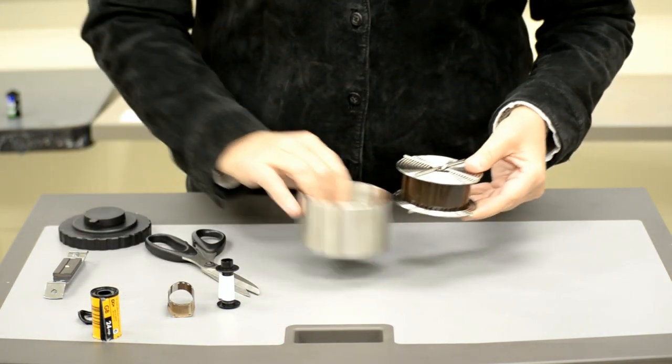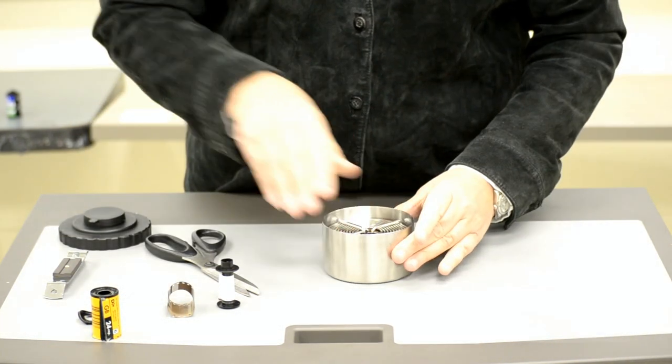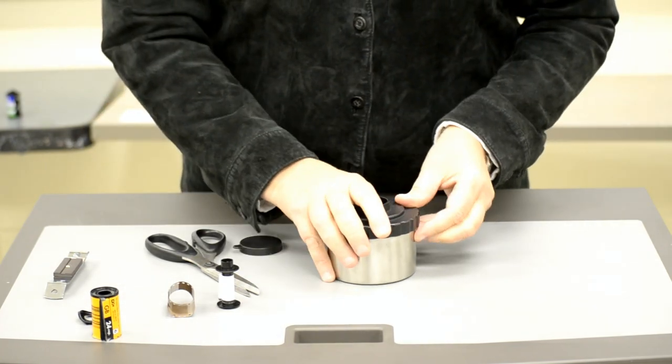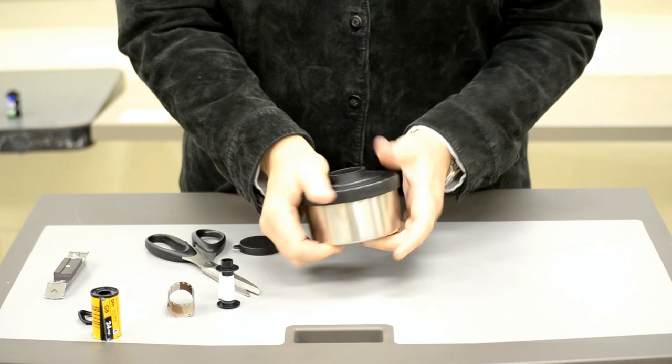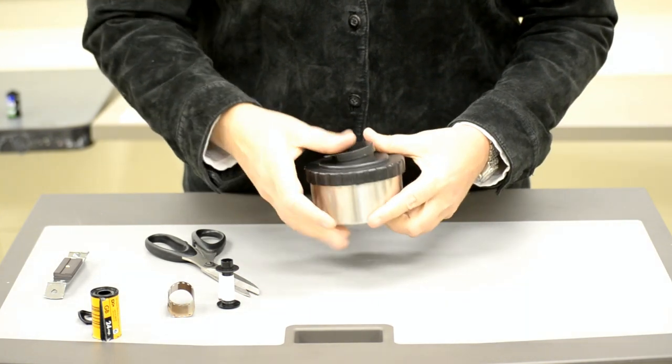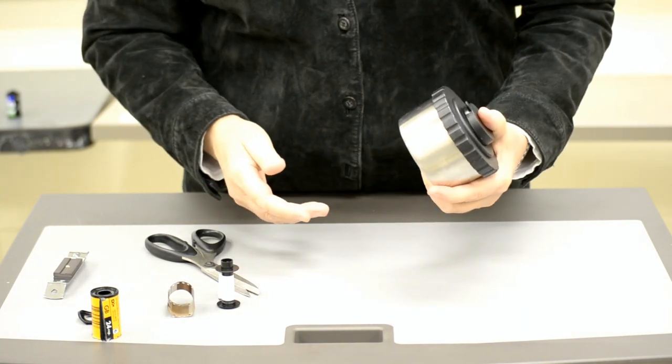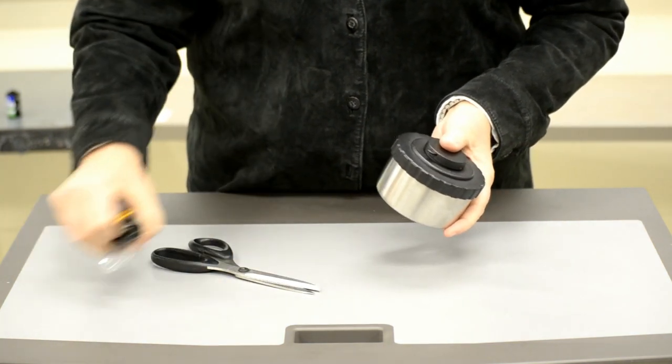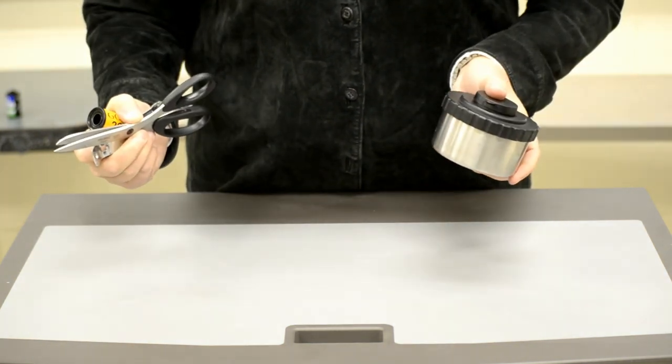And place your film reel into the light tight tank. Put the lid on top. And remove yourself, your tank, your lid, all of your trash from your darkroom out to the processing area.